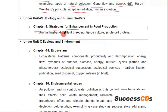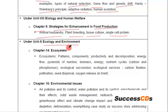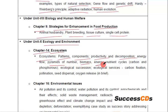From Chapter 9, Strategies for Enhancement in Food Production: animal husbandry, plant breeding, tissue culture, and single cell protein — these have been deleted. From the Ecology and Environment unit, Chapter 14 — Ecosystem: patterns, components, productivity and decomposition, energy flow, pyramids of number, biomass and energy, nutrient cycles, ecological succession, ecological services (carbon fixation, pollination, seed dispersal, oxygen release) — all deleted. From Environmental Issues: air pollution and its control, water pollution and its control, agrochemicals and their effects, solid waste management, radioactive waste management, greenhouse effect, climate change impact and mitigations, ozone layer depletion, deforestation, and case studies as success stories addressing environmental issues — all deleted.